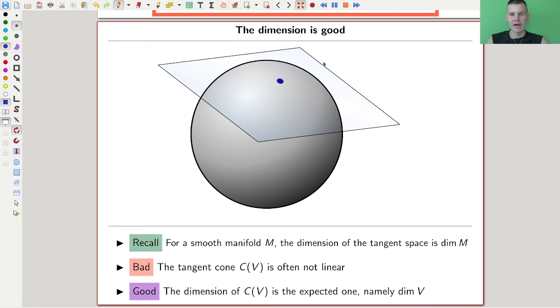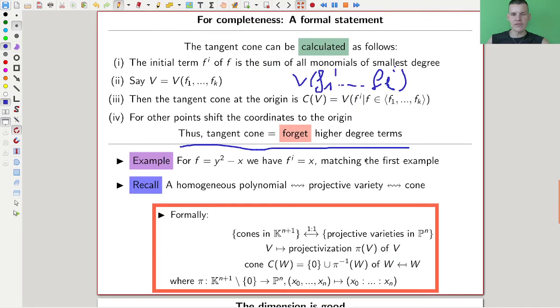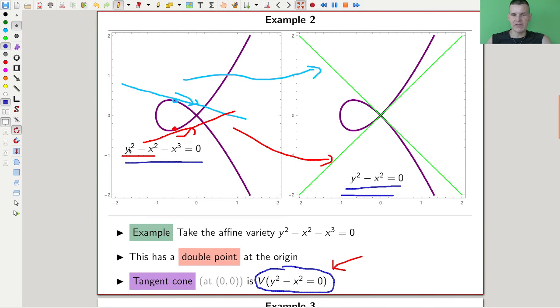You might wonder, and we'll discuss this in following videos before we move on to modern geometry, how good is this actually? How good is it actually as a tangent type space?